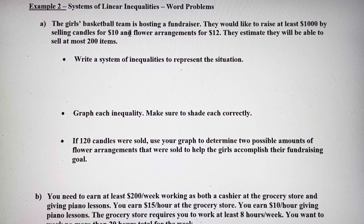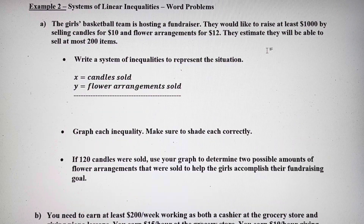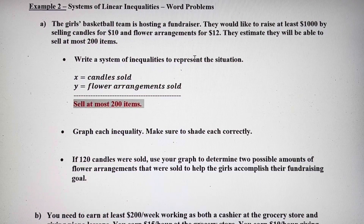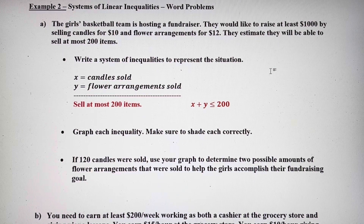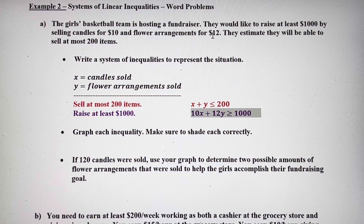The girls' basketball team is hosting a fundraiser. They would like to raise at least $1,000 by selling candles for $10 and flower arrangements for $12. They estimate they will be able to sell at most 200 items. So: x equals candles sold, y equals flower arrangements sold. At most 200 items means x plus y is less than or equal to 200. That's the first inequality. The second: 10x plus 12y has to be greater than or equal to $1,000.